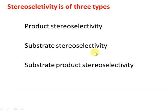Now we have discussed enantioselectivity — where one enantiomer forms in excess — and diastereoselectivity — where one diastereomer forms in excess. There are three types of stereoselectivity: product stereoselectivity, substrate stereoselectivity, and substrate-product stereoselectivity.